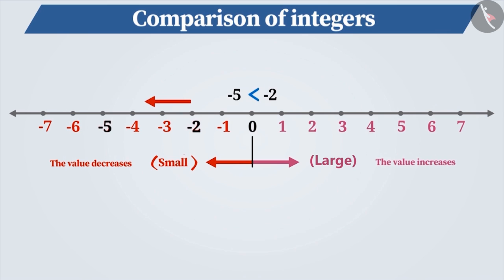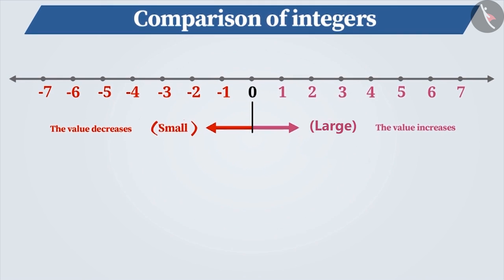Taking a look at the number line, it can be easily understood that the value of all negative integers is smaller than 0 and the value of 0 is smaller than all positive integers. Or, we can say that all positive integers are greater than 0 and 0 is greater than all negative integers.